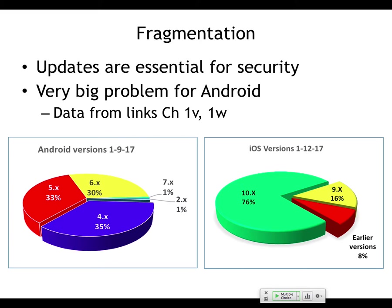Here's the fragmentation data. As of just a few days ago, 76% of iOS users are using the latest version. Android has never made it up to even 1% of devices using the latest version — ever. The 4.x version is still 35%, still the most popular of all Android versions. They fixed a lot of security problems, but those fixes have not reached the users, so what's the point of that?